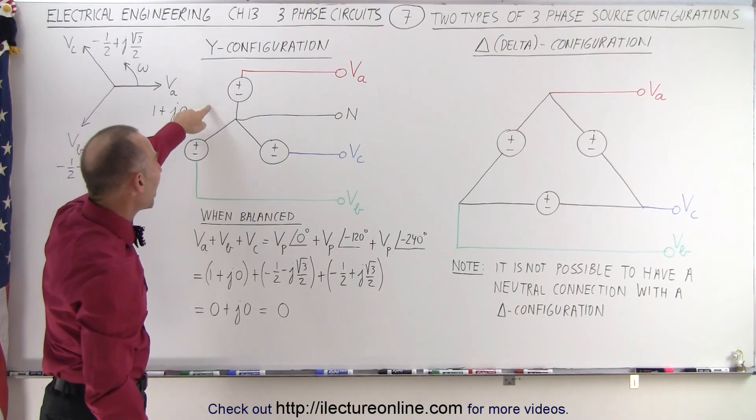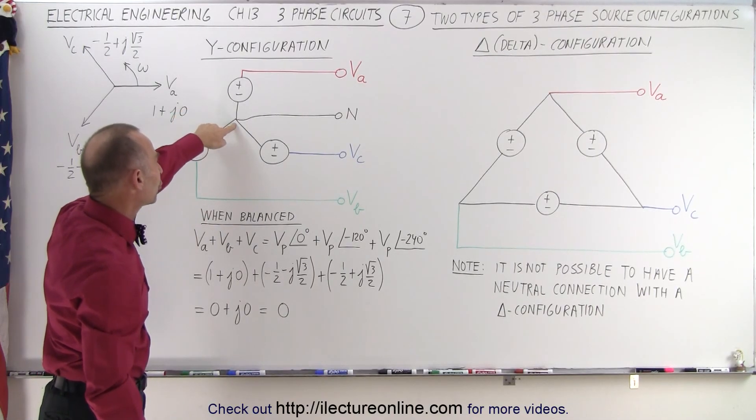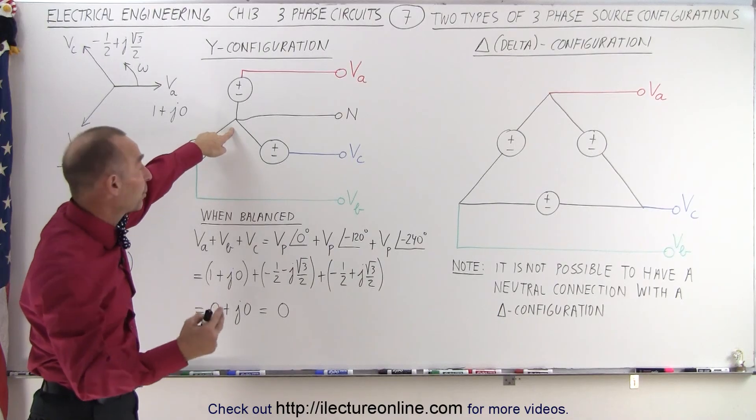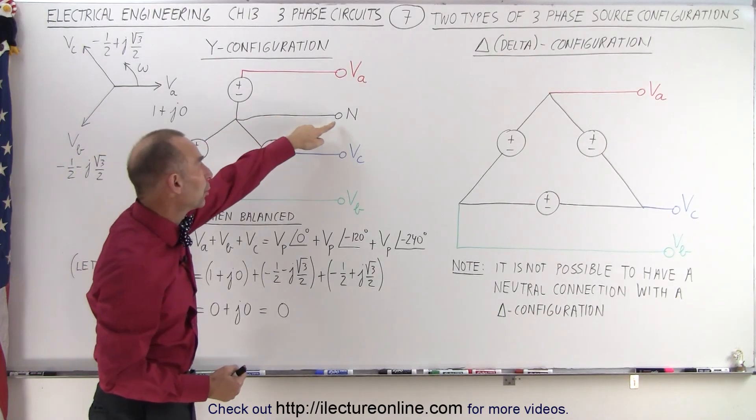Notice when we have a Y configuration, we'll have a neutral. All three will be connected. The coil of all three will connect together, forming a neutral connection.